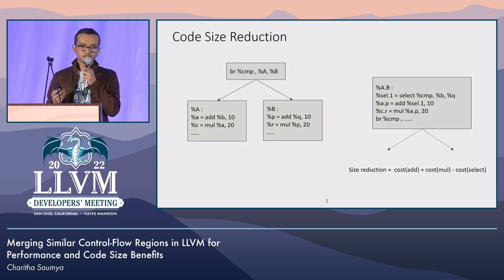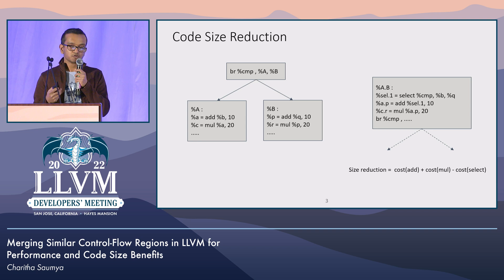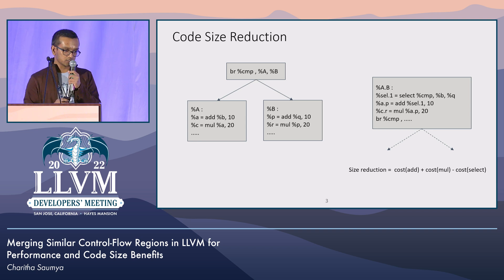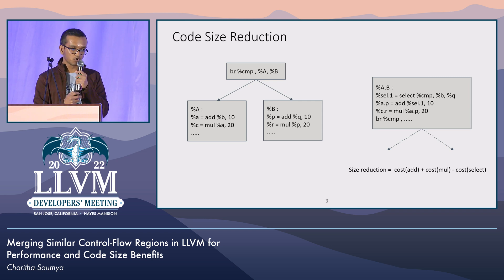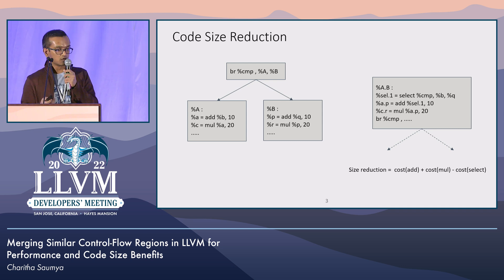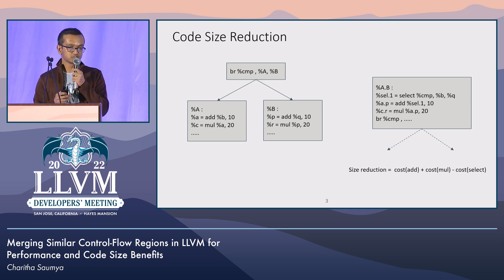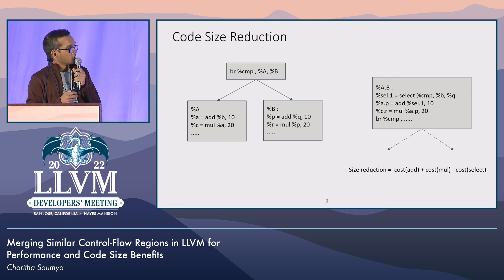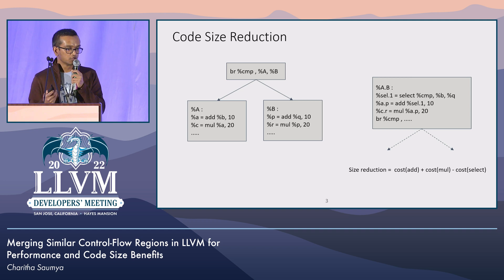Compilers actually like similar code because we can optimize them — we can use similar code to improve performance and code size. In this example, we can use similar code on the two sides of the conditional branch to reduce code size. Here you can merge the two additions and two multiplications with the help of select instructions to get the merged instructions on the right-hand side. And if this is profitable in terms of a cost model, we can use this transformation to reduce code size.